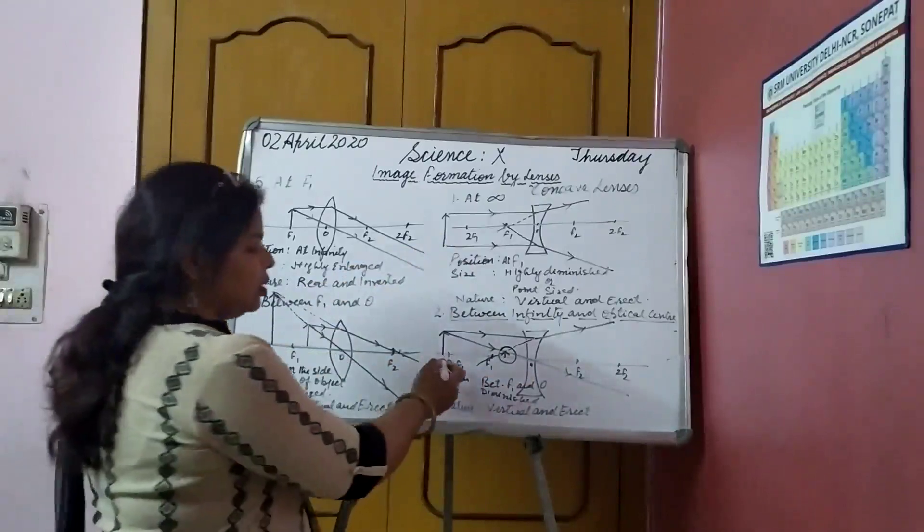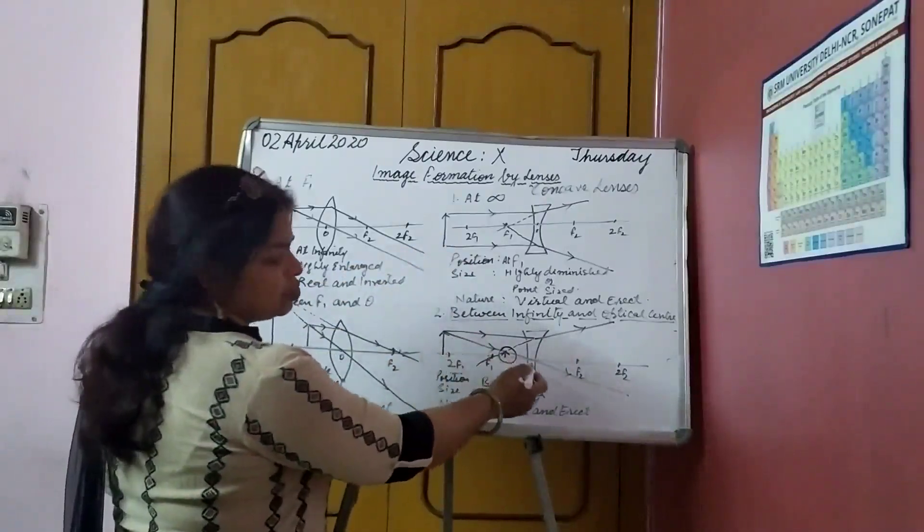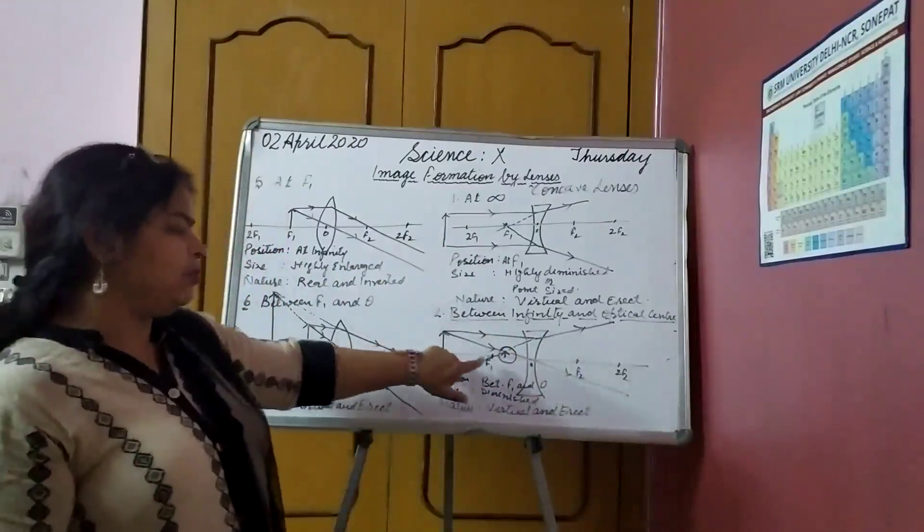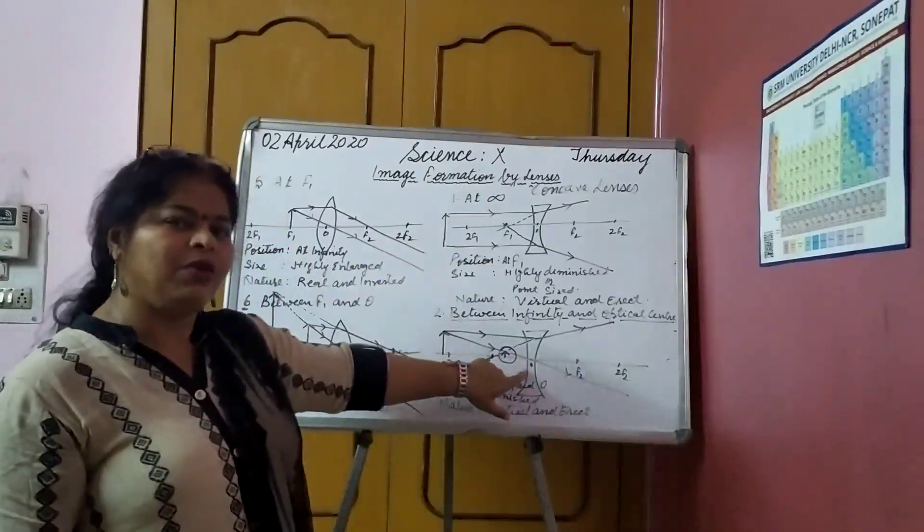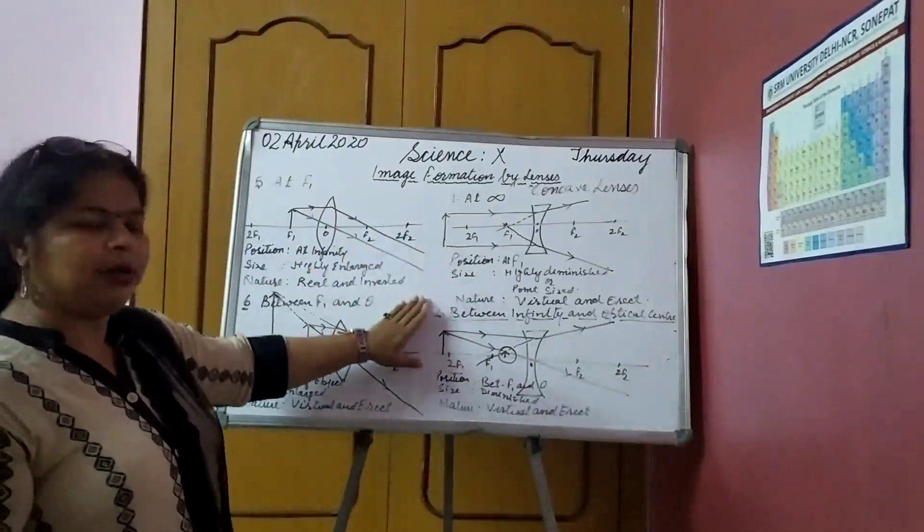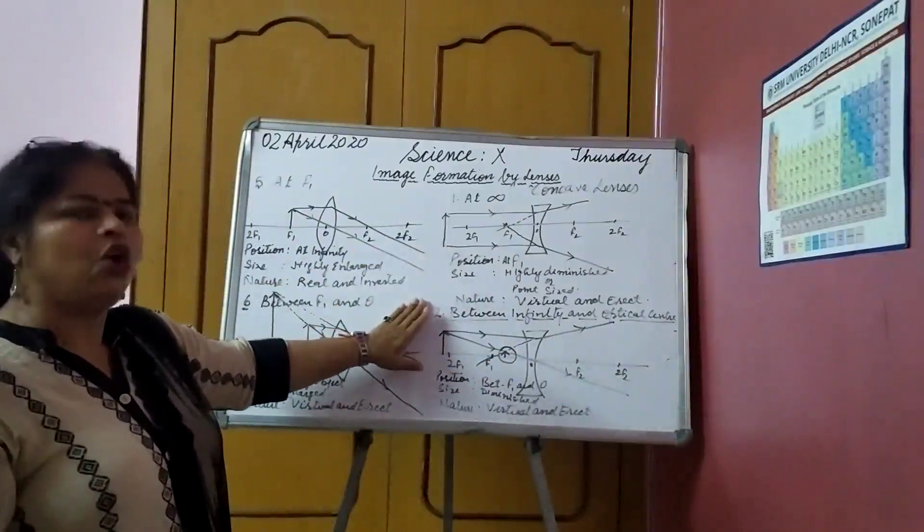Here, either at infinity or between infinity and optical center. You can keep it here. If you will keep it here, then also same thing. If you keep it here, there, then also same thing. So, every time we are going to have the same type of image formed.